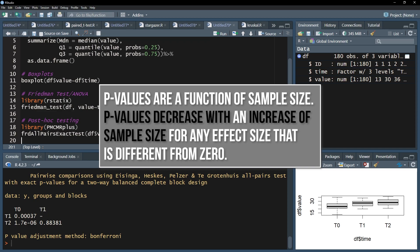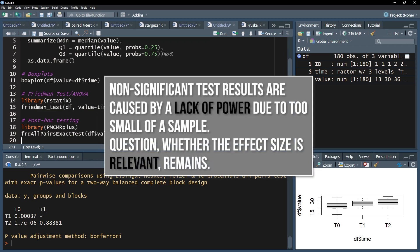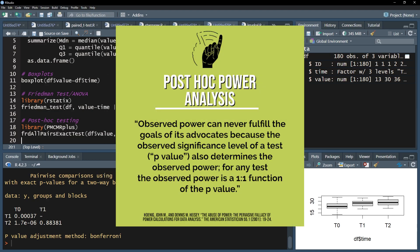Just keep in mind that a p-value, to which it all boils down to, is a function of sample size, which decreases with an increase in sample size for any effect size that is different from zero. So a non-significant test result in almost all cases tells you you're lacking statistical power as a result of too small of a sample. Don't however do post-hoc power analysis to justify your non-findings, because the observed power is a one-to-one function of the p-value.